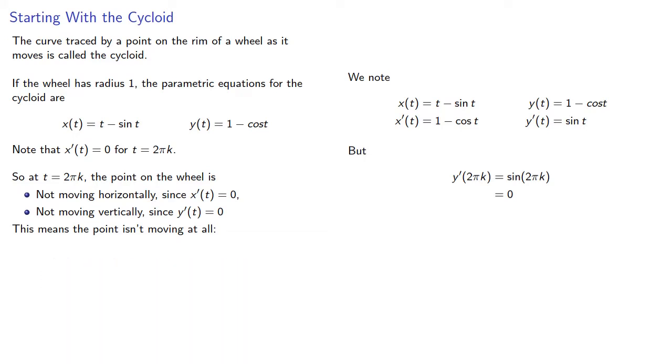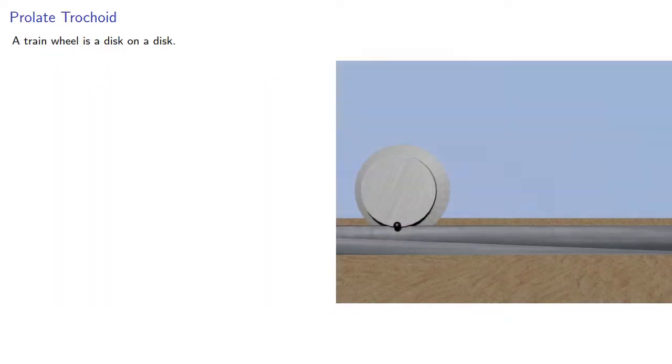And what this means is that any given point on a rolling wheel will be motionless at some time. A train wheel is essentially a disc on a disc.